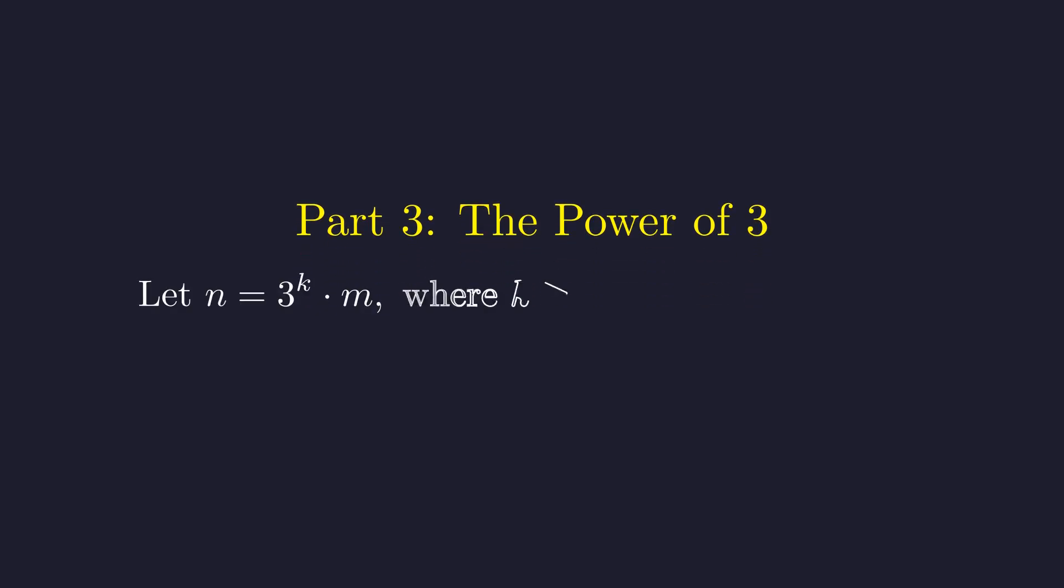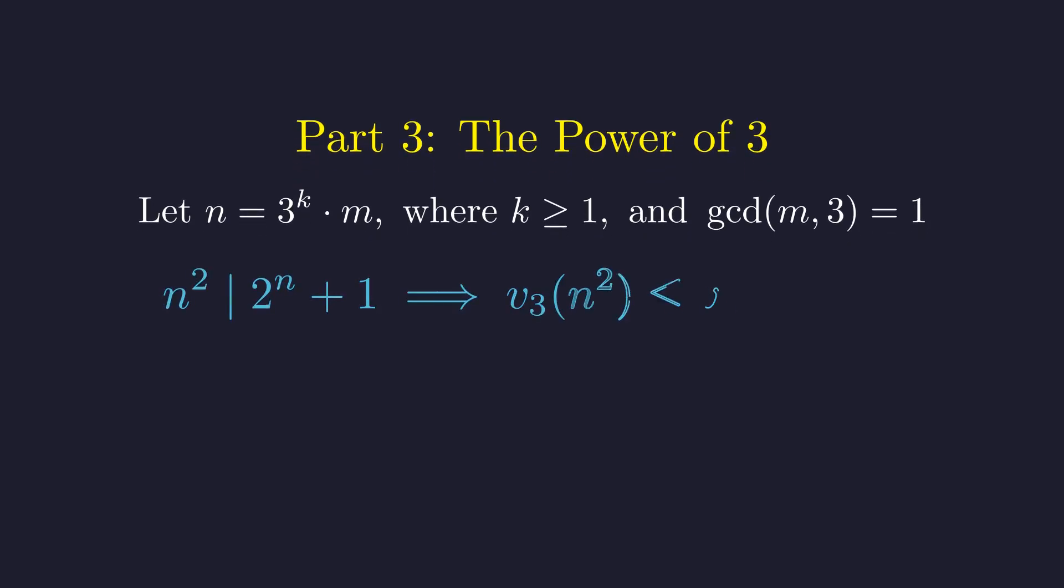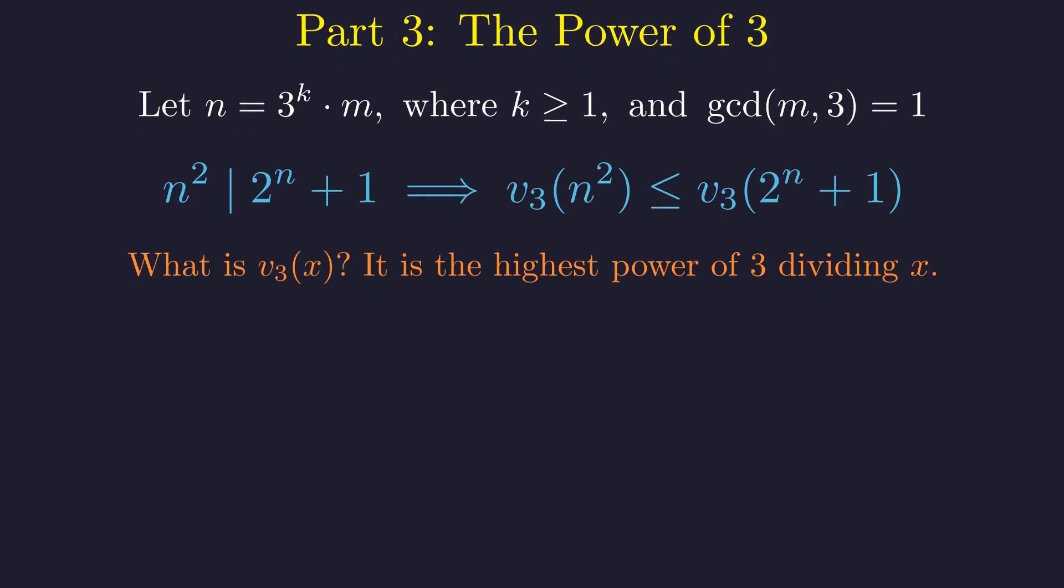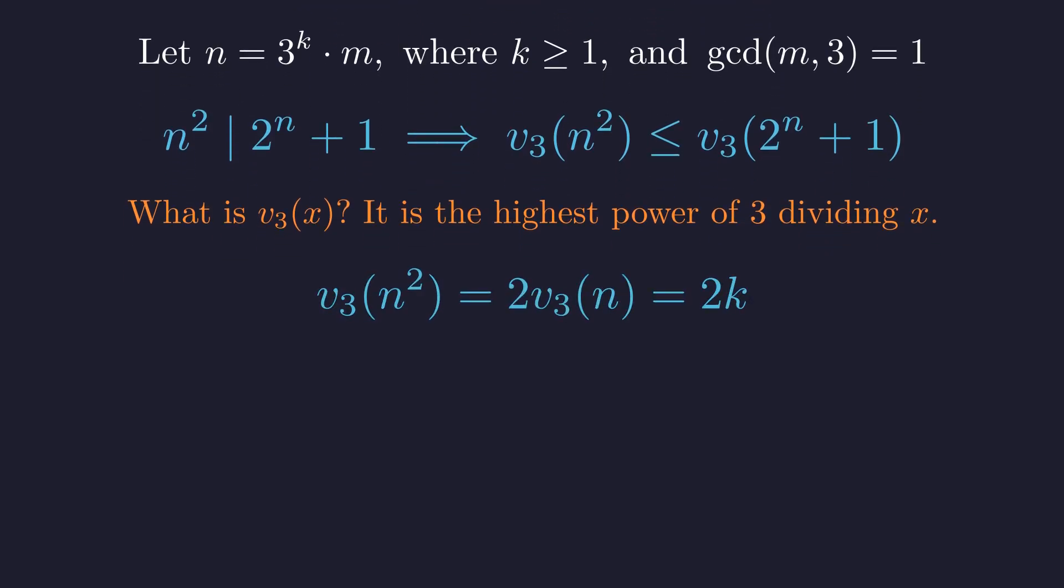We know n is a multiple of 3, but how many factors of 3 can it have? The expression n-squared hints that we need to be precise. Let's write n as 3 to the k times m, where m is not divisible by 3. In the language of p-adic valuation, our condition means the number of factors of 3 in n-squared is less than or equal to the number of factors of 3 in 2 to the n plus 1. Here, v sub 3 of x means the highest power of 3 that divides x. For example, v sub 3 of 27 is 3, since 27 equals 3-cubed. The number of factors of 3 in n-squared is simply 2 times k.